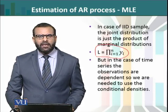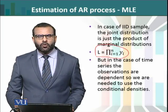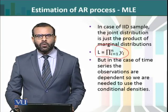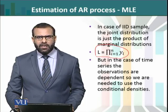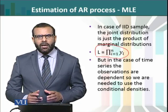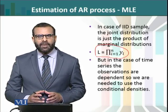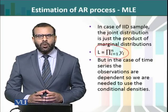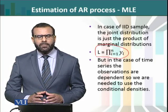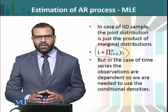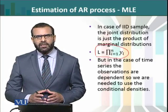Lekin hum jaante hain ki time series data ke liye hum yeh assume nahi kar sakte, kyunki time series data mein observations jo hain woh dependent hoti hain. Isliye likelihood function banate hue, hum usko as a product of marginal densities nahi likh sakte. Uske liye phir humein conditional probabilities ki help leni hogi. To IID sample aur time series sample mein yeh ek major difference rahega: time series data ke liye jab aap kisi model ke liye ML estimation karenge, to likelihood function ko — jo hum cross-sectional data mein product of marginal densities ke roop mein likhte hain — yahan par humein conditional distribution ka saath lena padta hai.